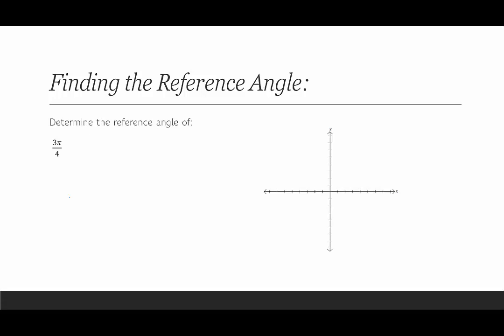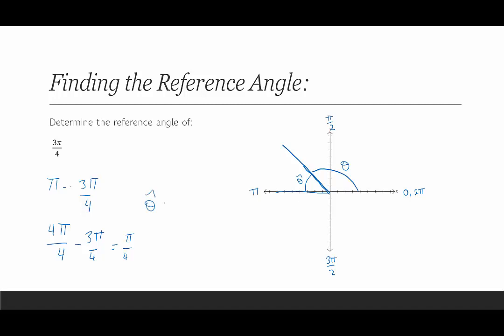Another example in radians: 3π/4. Labeling: 0, π/2, π, 3π/2. 3π/4 is exactly halfway between π/2 and π, so the terminal side goes up into quadrant 2. Theta hat is along the negative x-axis up to that terminal side. To find the reference angle: π minus 3π/4. Since π equals 4π/4, we get 4π/4 minus 3π/4 equals π/4. This example has the same reference angle as the previous radian example — just a coincidence.